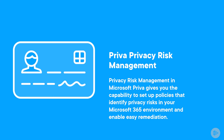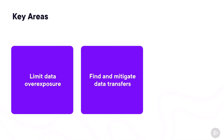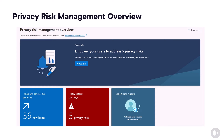Now let's dive deeper into each solution, starting with Priva Privacy Risk Management, which gives you the capability to set up policies that identify privacy risks inside your Microsoft 365 environment and enable easy remediation. Privacy Risk Management has three key areas: first, to limit data overexposure; second, to find and mitigate data transfers; and third, to minimize stored data. The Privacy Risk Management dashboard provides an overall view into your organization's data in Microsoft 365. Privacy administrators can monitor trends and activities, identify and investigate potential risks involving personal data, as well as build policies.